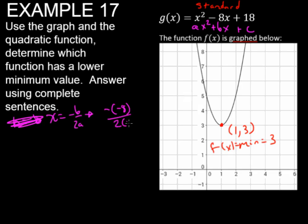So we get plus 8 over 2, which is 4. So far, we are at 4 on the x-axis. Now let's plug 4 in to find our minimum value.